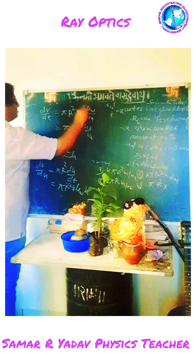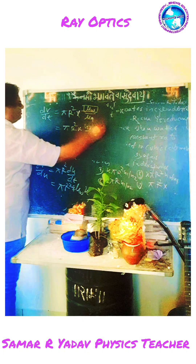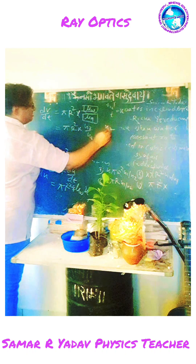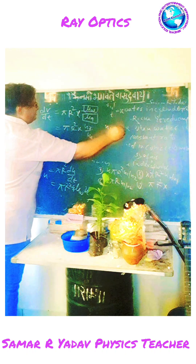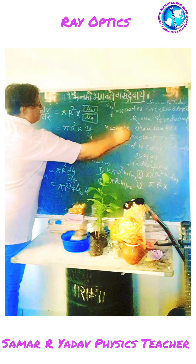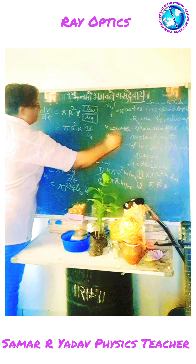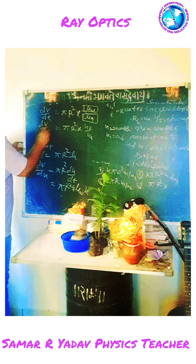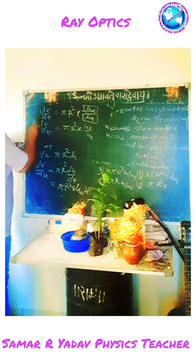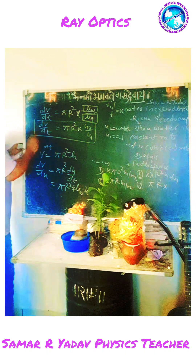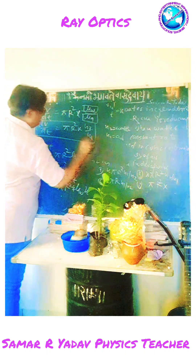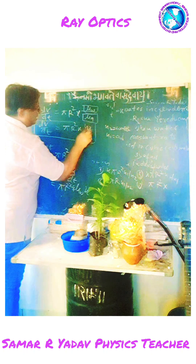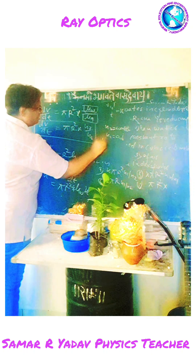Here N2 is the refractive index of water and N1 is the refractive index of air. So dV/dt = πr²·x·N2/N1. Looking at the options, this matches option (b): x·πr²·N2/N1. So the correct option is b.